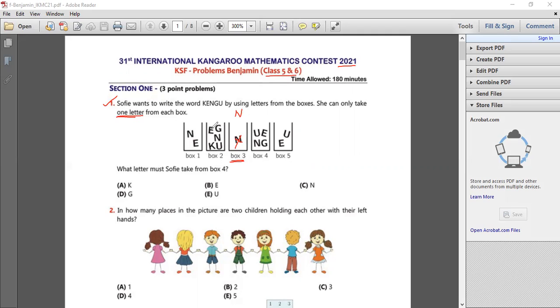And then from box number one, since we've already taken N, you can take K. And from box number five, since we've already taken E, you take U.